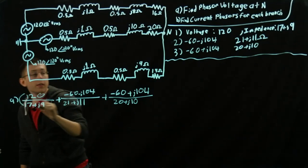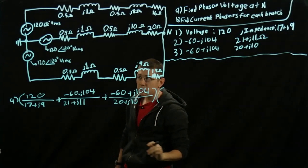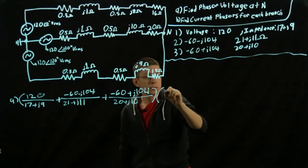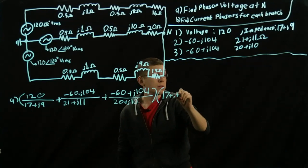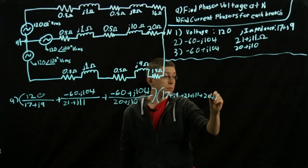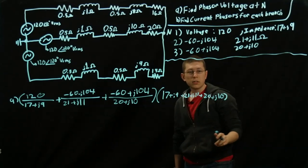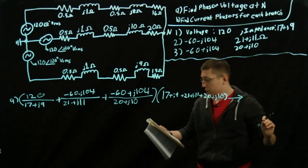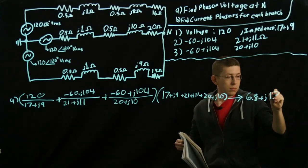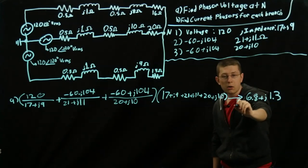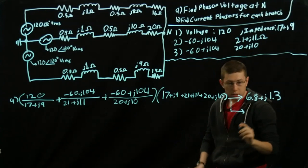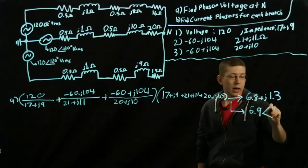And now what we're going to do is multiply this entire sum by the sum of the resistances, or the impedances. So it'll be times all these sums, 17 plus J9. So when you do this out, you get a voltage of 6.8 plus J1.3. And then when we do our final conversion to make this a phasor, where we use our sine and cosine correlations, this turns into 6.9 volts at 11 degrees RMS.